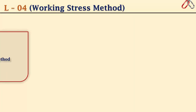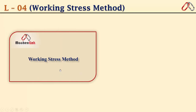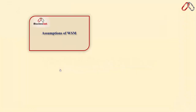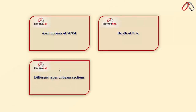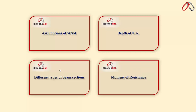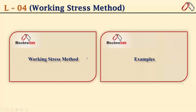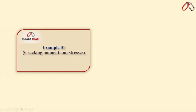Let's take a look at what we are going to cover in this lecture. There are two parts. In the first part I will explain the working stress method in greater detail — first the basic assumptions of WSM, second the process of finding actual and critical neutral axis, third the different types of beam sections according to steel and concrete, and lastly the moment of resistance that a beam section resists internally.